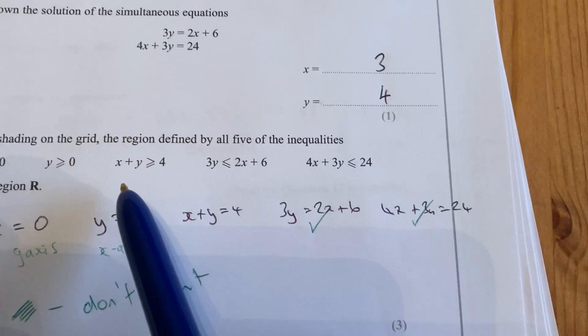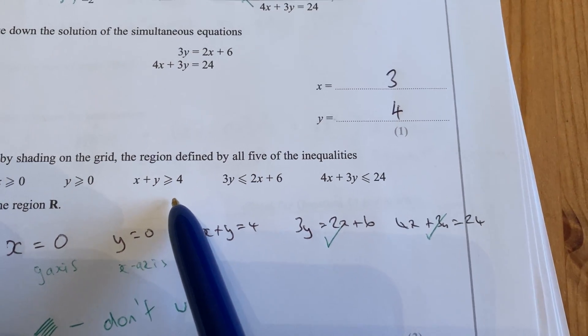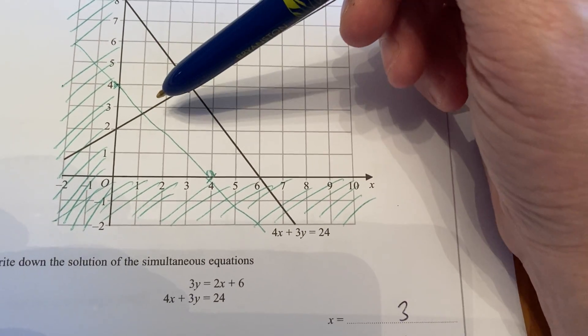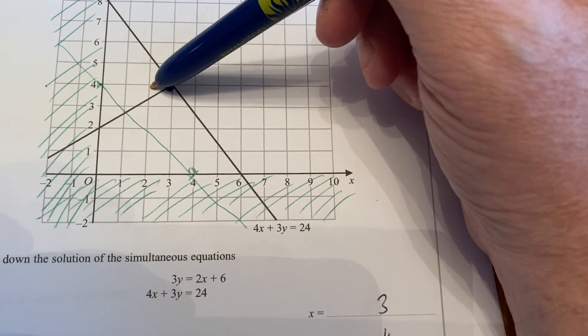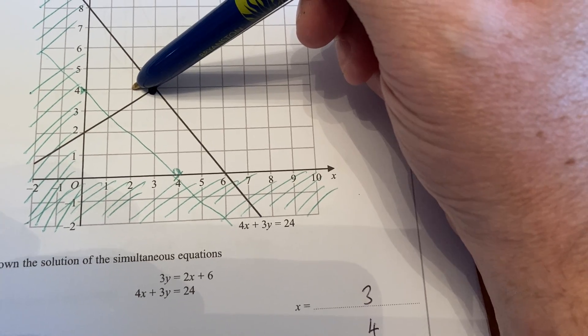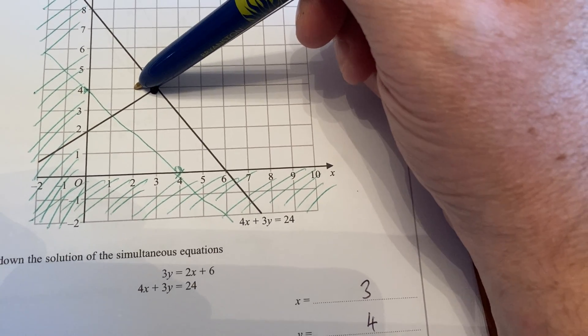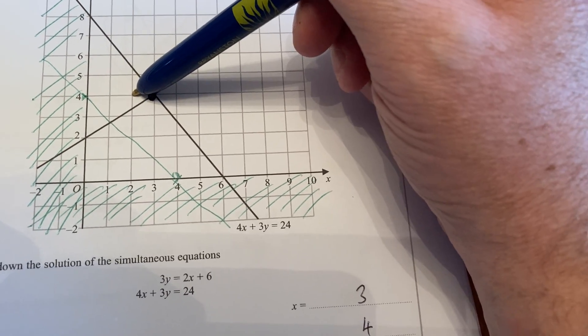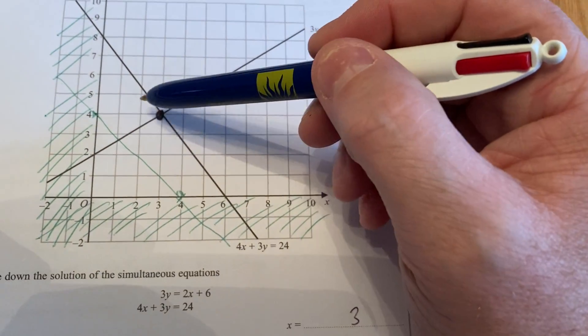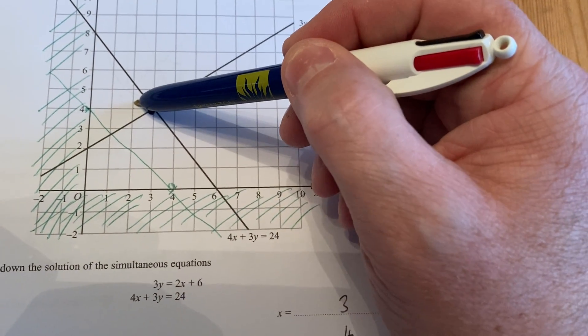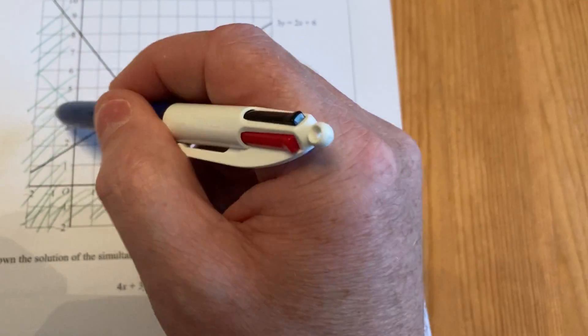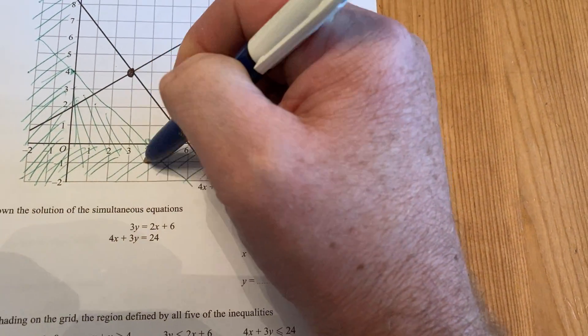Now, I want the bit where x plus y is bigger and equal to 4. I know it's one side of this green line or the other. I'm not quite sure which side it is, so I'm going to try a point. I'm going to try this point here, that's the point 2, 4. If x was 2 and y is 4, if I add them together, x plus y is 6. Now, 6 is bigger than 4, so that is the side of the line that I do want. 2, 4 is the side of the line that I do want, so I don't want the left-hand side, the underneath side of this green line, so I'm going to cross that one out as well.